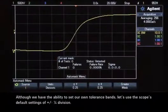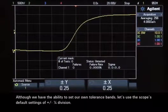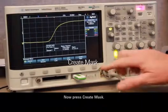Although we have the ability to set our own tolerance bands, let's use the scope's default settings of plus and minus a quarter division. Now press Create Mask.